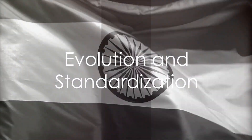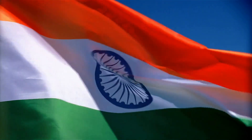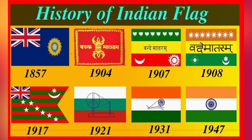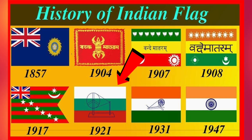As the freedom movement gained momentum, so did the changes in the flag. In 1921, a flag was proposed by none other than Mahatma Gandhi — a flag that would become an emblem of independence and unity. This flag introduced three powerful colors, each representing a different aspect of Indian society. The top band, a vibrant saffron, represented courage and sacrifice. The middle band, white, stood for peace and truth, while the lower band, a deep green, symbolized fertility, growth and the auspiciousness of the land.